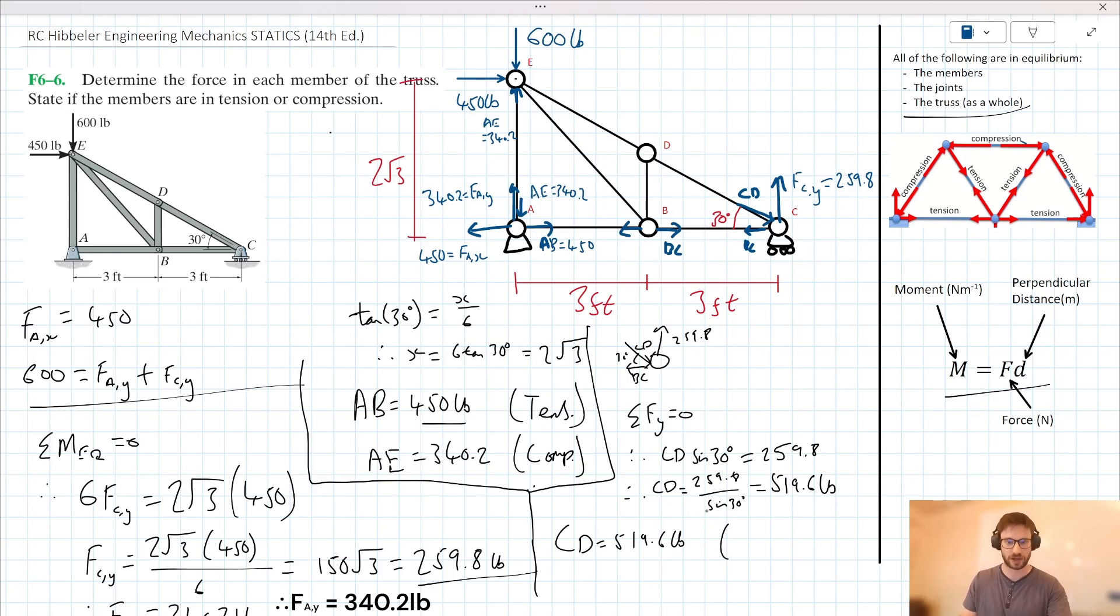So CD is equal to 519.6 pounds. And this is in, let's have a look here. This is in compression. We could then note that the horizontal component of CD is equal to BC. So we could say, therefore, BC is equal to 519.6 cosine 30, which when we bring in our calculator, gives us a value of 450. So BC takes a value of 450.